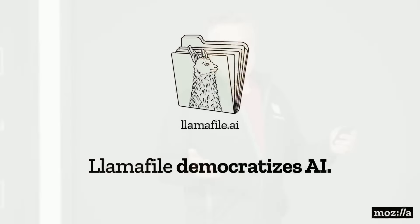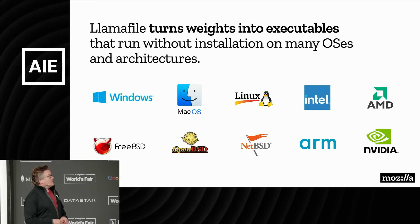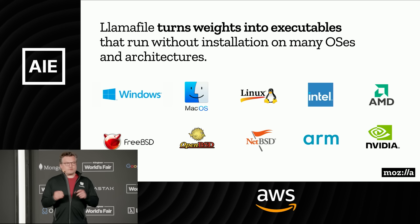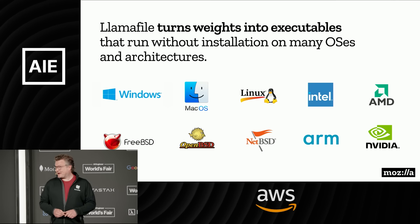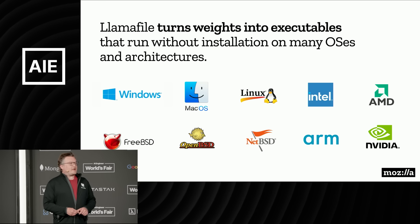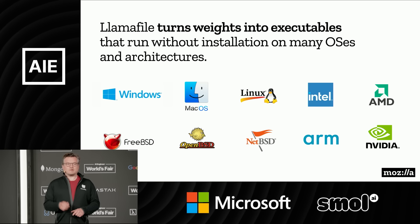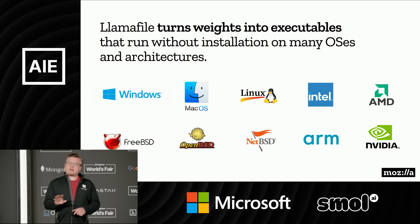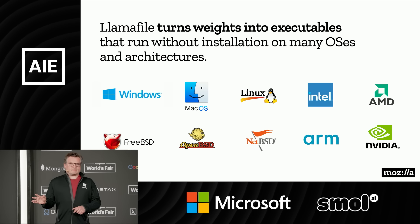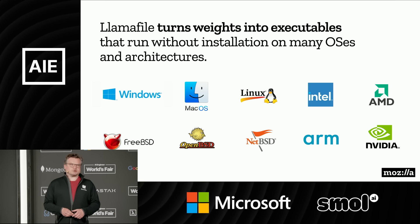LlamaFile is an open source project from Mozilla with the goal of democratizing access to AI. The original magic trick of the project that Justine figured out is how to turn weights into programs. LlamaFile is a single file executable that runs without any installation on pretty much every operating system, every CPU architecture, and every GPU architecture.